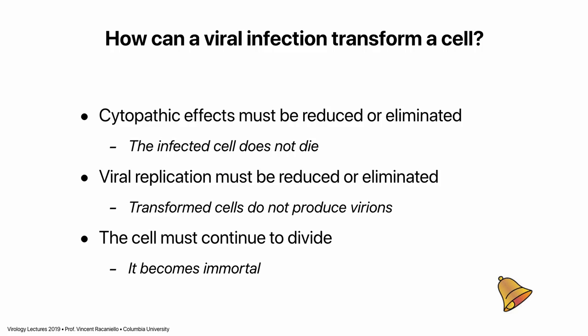How can a viral infection result in transformation? First, cytopathic effects have to be either reduced or eliminated — the virus can't kill the cell if the cell is to live forever. You have to reduce virus production, because more virus production is associated with cell death. And the cell has to continue to divide — that's what we mean by immortal. These are the three requirements. This should ring a bell: these are exactly the things that happen in persistent infection, so transformation of cells is in many ways like a persistent infection.